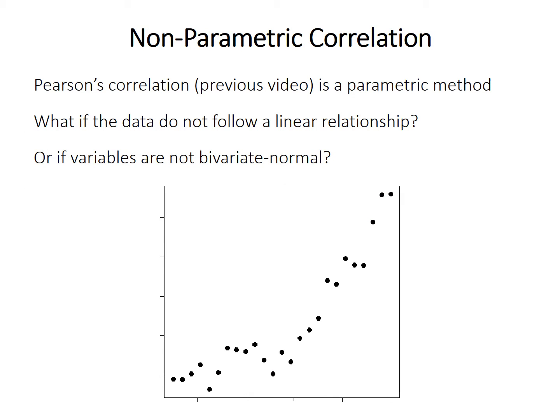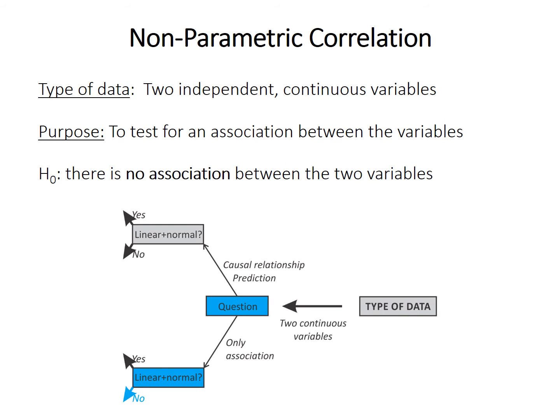Pearson's product-moment correlation is a parametric method, meaning it requires both variables to be normally distributed, at least for hypothesis testing purposes. It also tests for a linear relationship. But what if the data don't follow a linear relationship, or one or both variables are not normally distributed? That's where nonparametric correlation methods come in.